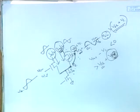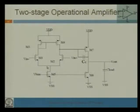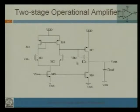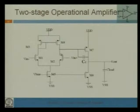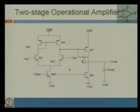The first stage is essentially a differential NMOS differential pair, and the second stage is the gain stage. The total complete gain is the multiplication of the first stage gain and the second stage gain. The compensation capacitor C_C is used to compensate the frequency response.